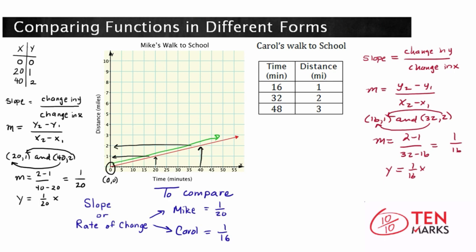So to compare, the slope or the rate of change for Mike is 1/20, and for Carroll it's 1/16. Now, what does this mean? This means it takes Mike 20 minutes to walk 1 mile, and it takes Carroll 16 minutes to walk 1 mile. So we can tell by the rate of change, or the slope of the line, that Carroll is walking faster.